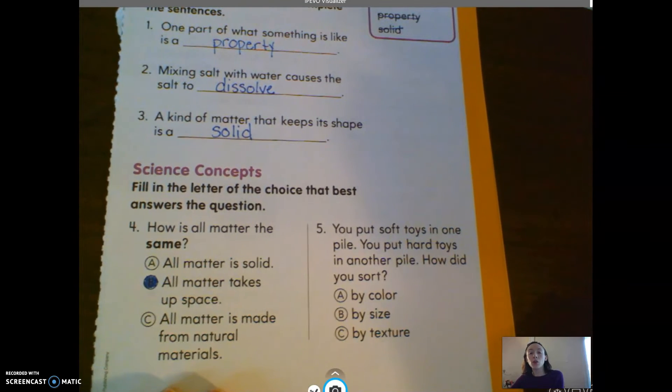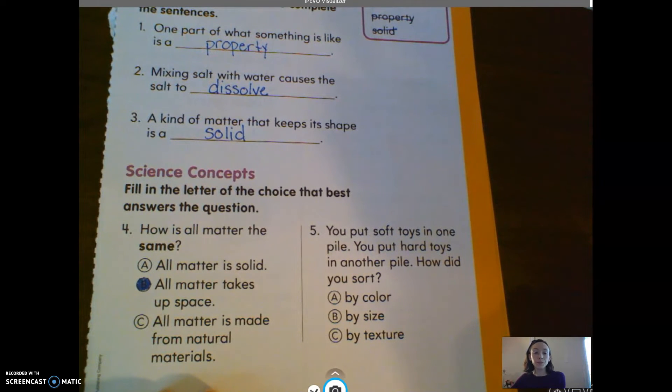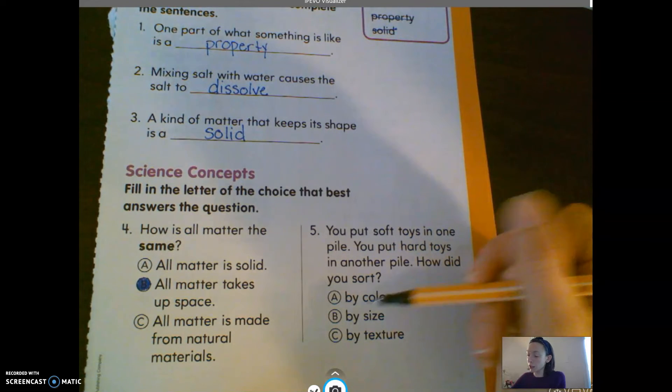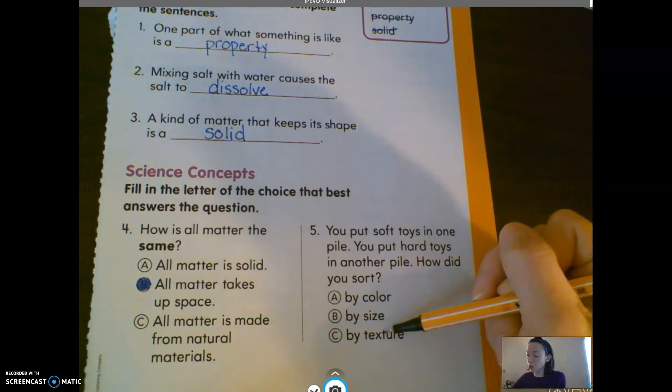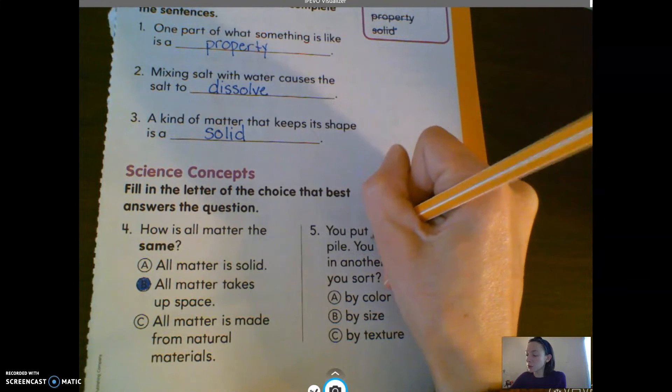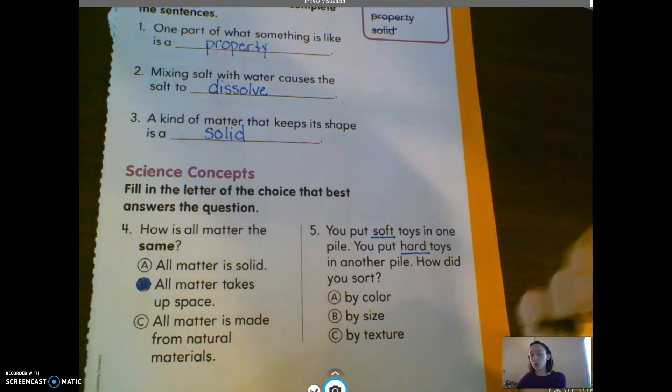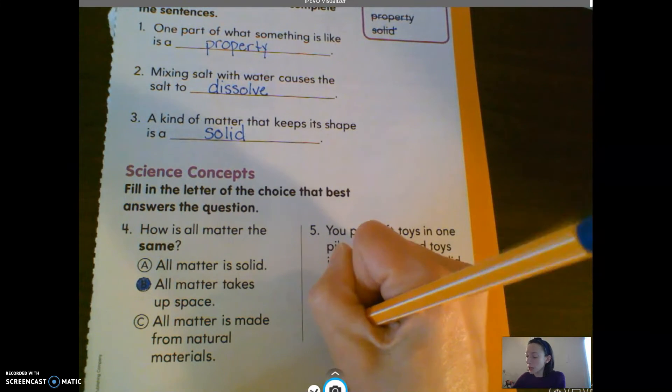Number five: you put soft toys in one pile, you put hard toys in another pile. How did you sort? Did you sort them by color, by size, or by texture? Remember the words soft and hard. That's how something feels. So that would have to be C, by texture.